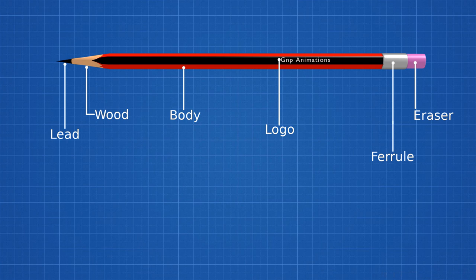A typical modern day pencil consists of solid pigment core, typically graphite, wood, painted body, a logo, ferrule and eraser. Let's have a look into how a pencil is made.